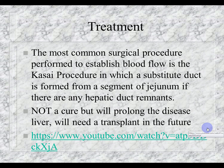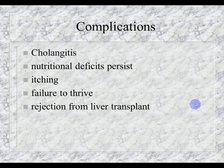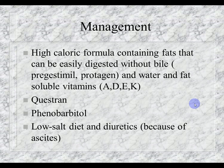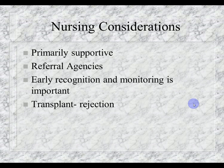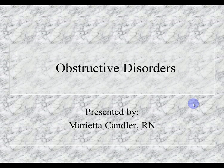Complications include inflammation of the bile ducts, nutritional deficits, itching, failure to thrive, and transplant rejection. Management includes high-caloric formula containing easily digestible fats; Pregestimil is commonly used. Water- and fat-soluble vitamins A, D, E, and K must be replaced. Cholestyramine decreases itching and improves liver function; ursodeoxycholic acid also helps with itching; phenobarbital decreases irritability; low-salt diet and diuretics help with ascites. Nursing considerations are primarily supportive — referral to agencies, early recognition, monitoring, and teaching about transplant rejection signs and symptoms.